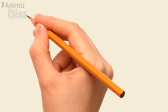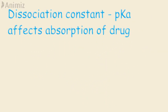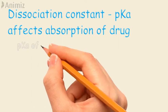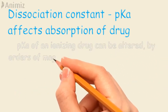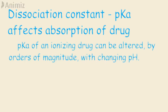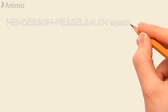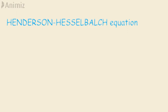Back to dissociation constant: pK denotes the dissociation constant of a drug. pK affects the absorption of a drug, so determination of pK values is very important. For an ionizing drug, pK can be altered by orders of magnitude with changing pH.